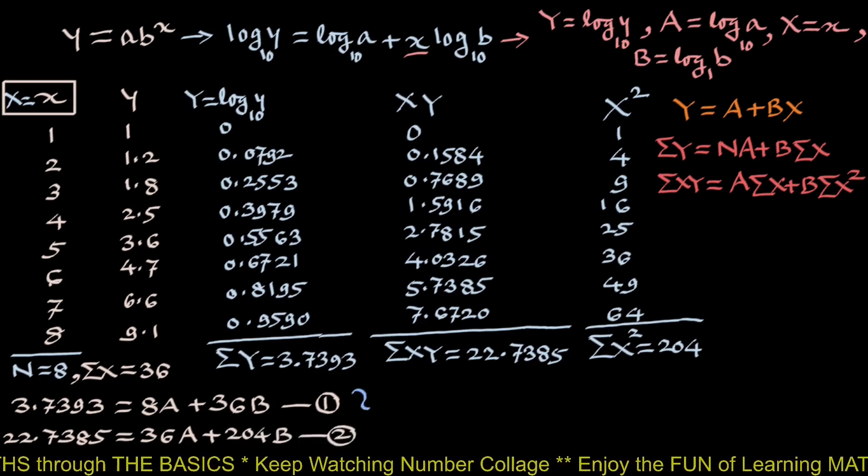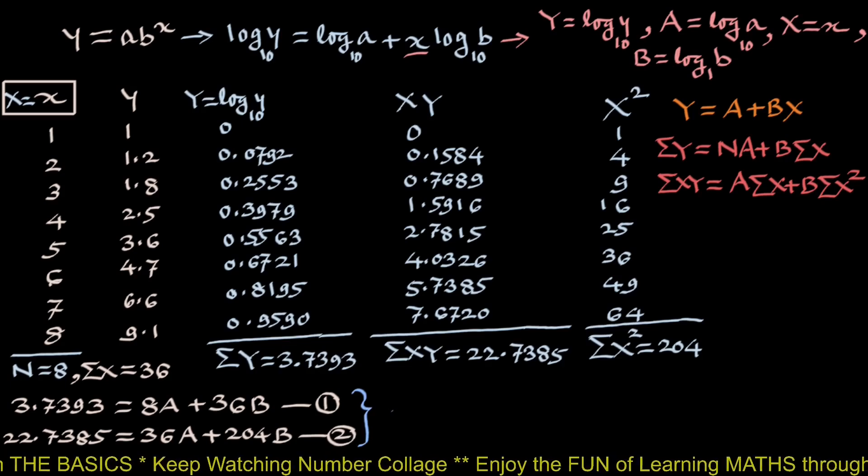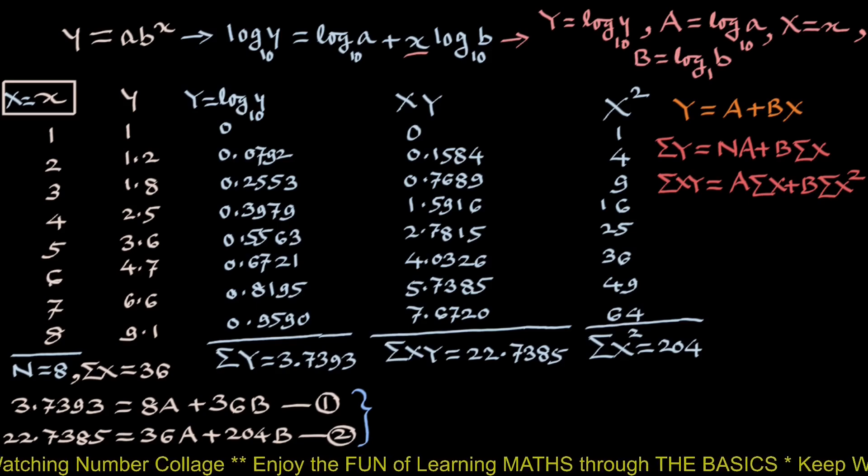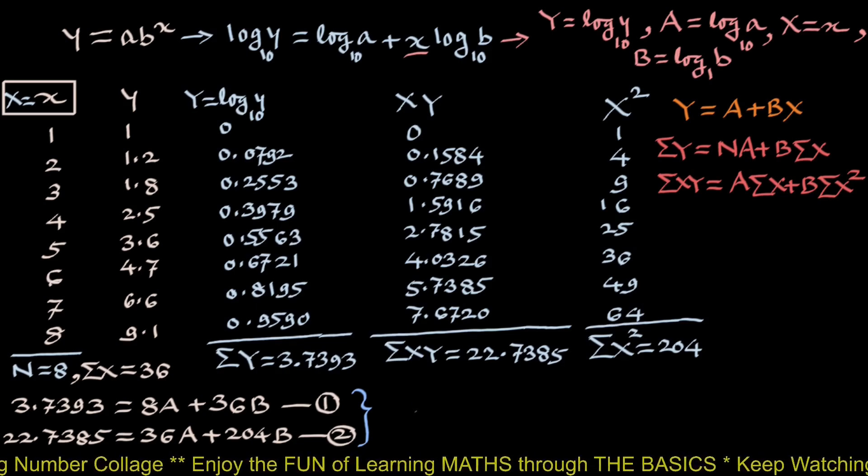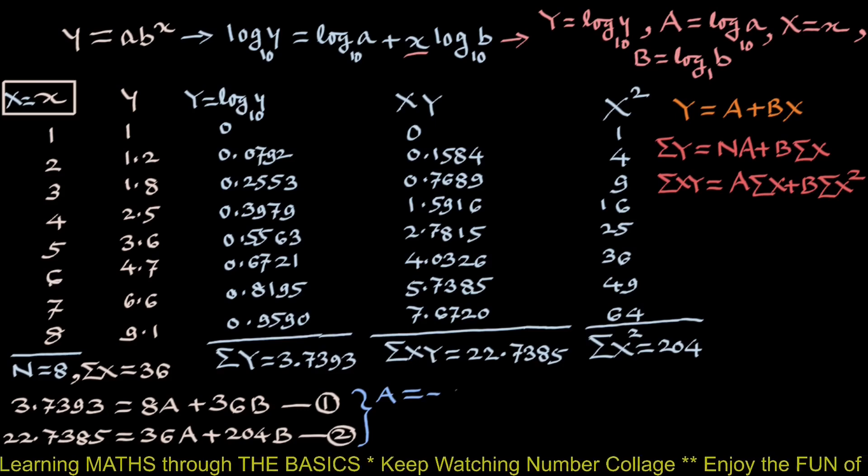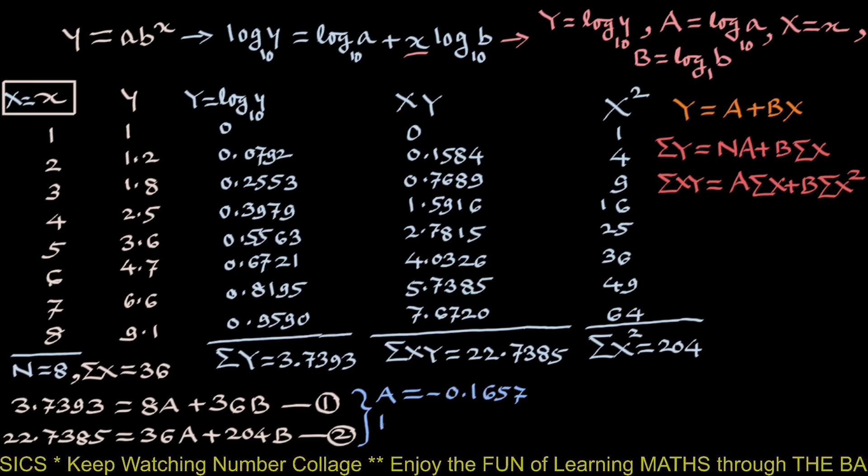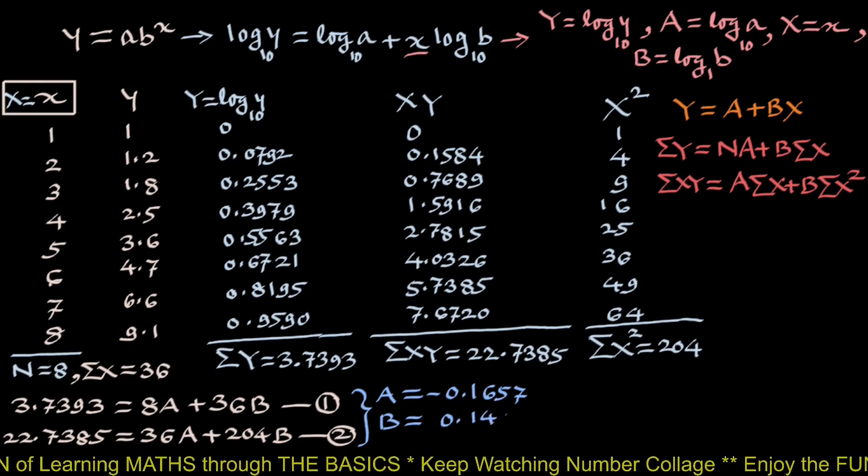We will solve these linear equations as usual for which you may refer my previous two videos part 1 and part 2. We get A equals minus 0.1657 and B equals 0.1407.